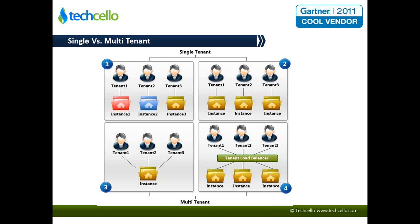Three and four are the multi-tenant models. The fundamental difference between these two is the capability to take up more load. In Level 3, you have pretty much one instance serving multiple tenants, and the number of tenants you can serve varies depending on hardware configuration and capacity. In Level 4, it's much the same except it can serve a large volume of tenants — 1,000, 2,000, or even more.